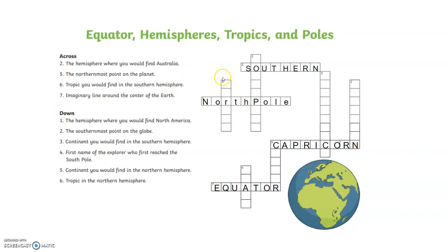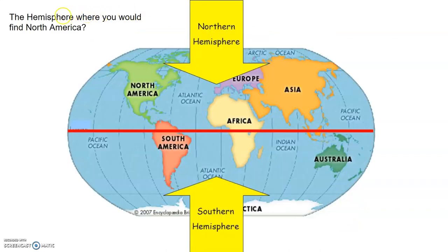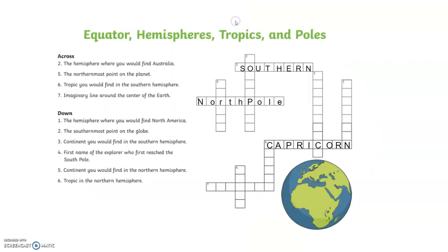Down means they are starting up and going down. Number one down is over here. The question is: the hemisphere where you would find North America. Let's take a look at the map — where is North America? We have Australia, Asia, Europe, Africa, South America, and North America. That whole area is the northern hemisphere. So number one down, the last letter should be an N — 'northern.' Yep, it works!